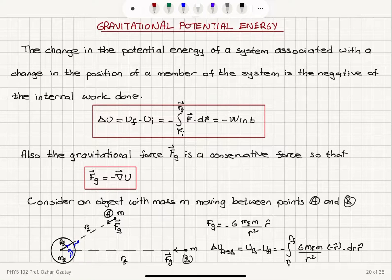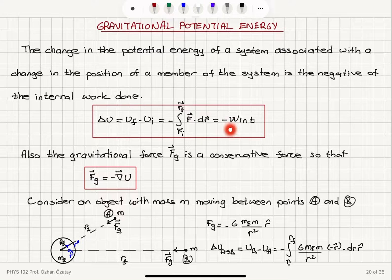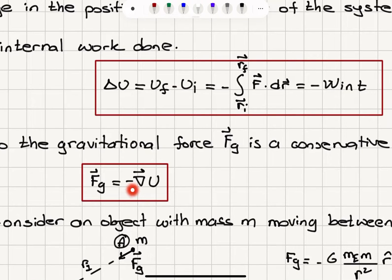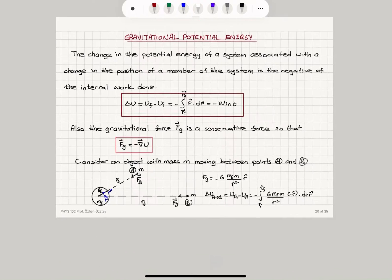This is nothing but a statement of the fact that F is a conservative force, so the force is minus the gradient of the potential energy, or the change in the potential energy is minus the work done by this force. Also, the gravitational force is a conservative force, so we can write it as minus gradient of the gravitational potential energy.